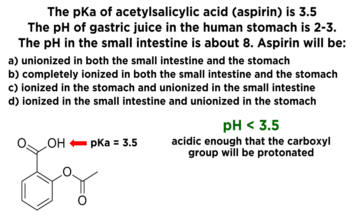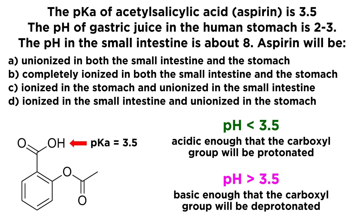We can always correlate pH and pKa as follows: if we have a pH below the pKa, or below 3.5, then the solution will be acidic enough that we have enough of a source of protons in solution that the carboxyl group will be protonated. The solution is acidic enough that there are things in solution that are even more acidic than that carboxylic acid functional group, and it will remain protonated. By contrast, if the pH is significantly above 3.5, the solution is basic enough that the carboxyl group will be deprotonated — there will be something in solution basic enough for that carboxyl group to transfer its proton onto it.